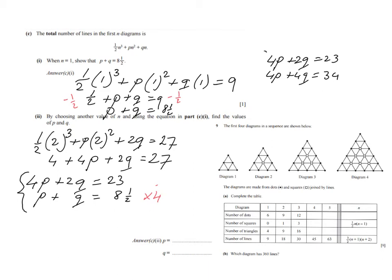4p plus 4q equals 8.5 times 4, 34. So make sure everything times 4. Good. Now we can eliminate because the coefficients of my p are the same. And I have to subtract to eliminate p. So 4p minus 4p is 0. It's gone. 2q minus 4q is going to be minus 2q equals. And then 23 minus 34 is going to be minus 11.